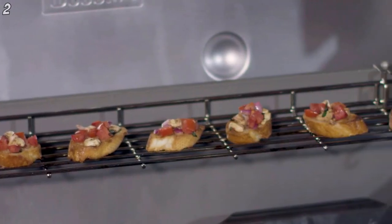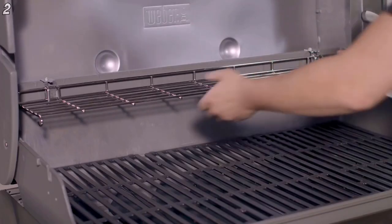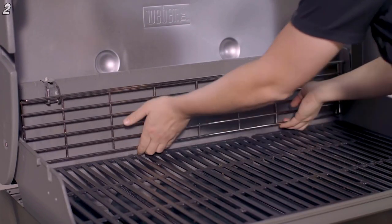Porcelain enameled cast iron cooking grates retain heat for better sear marks and are easy to clean with a stainless steel grill brush. Tuck away warming wrap helps keep food warm. This unique feature allows you to fold it down when not in use.